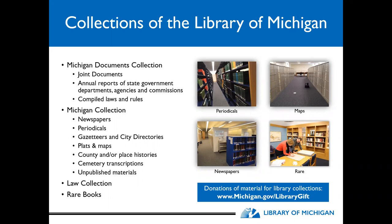We also have a rare books room, which is roughly 30 to 35,000 items divided amongst three different types of topics — Michigan, law, and general Americana — with the oldest item being from 1490. We're always on the lookout for items to add to our collection. If you're interested in donating materials to the Library of Michigan, you can go to michigan.gov/library/gift for more details.